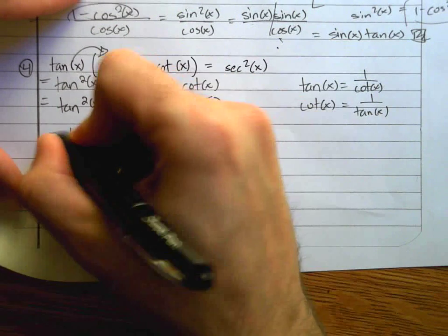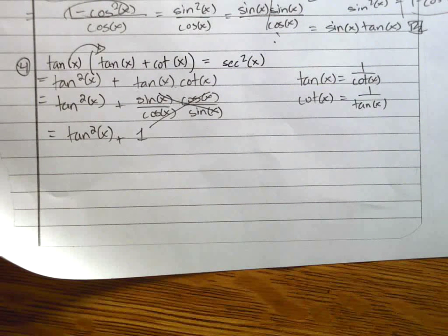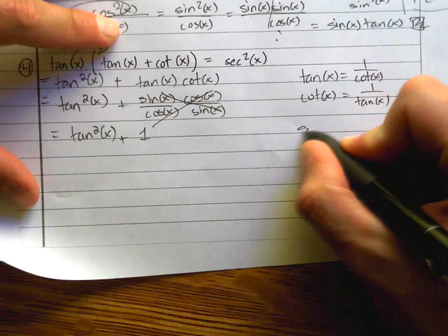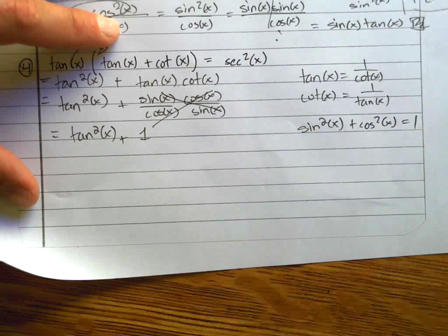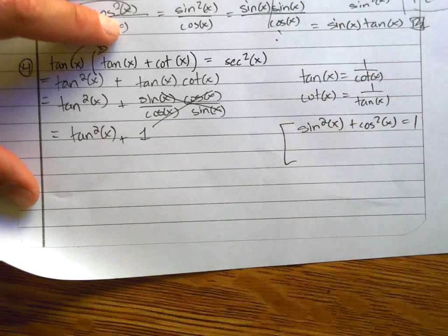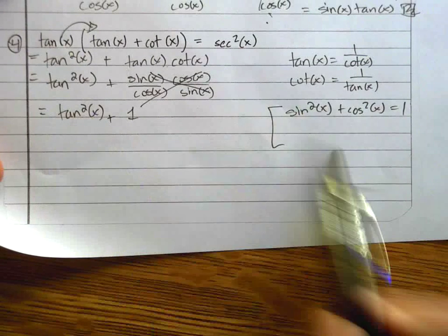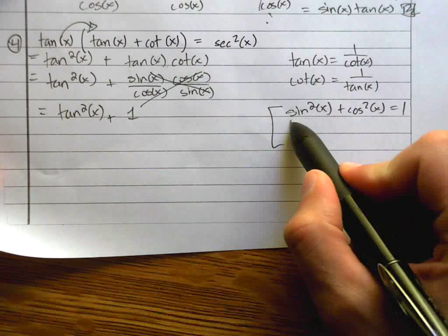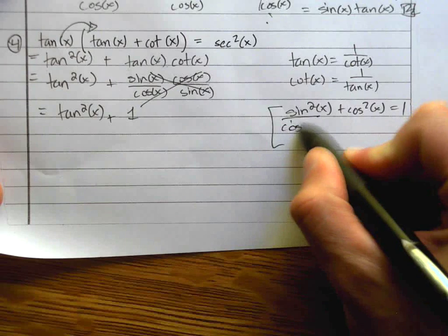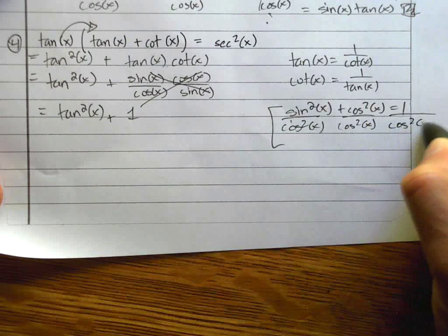So now I have tangent squared plus 1. What does that equal to? Well, you should know what it equals, because there's an identity associated with it. It's not this identity, but it's like it. It's based on it. How can I get something that looks like tangent squared out of this stuff?